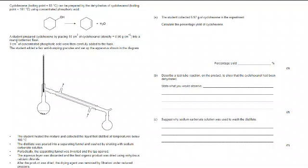The student heated the mixture, collected the liquid that distilled at temperatures below 100, distillate poured into a separating funnel, washed by shaking with sodium carbonate, periodically separating funnel inverted and the tap opened, aqueous layer discarded, final organic product dried using anhydrous calcium chloride. After drying, drying agent was removed by filtration under reduced pressure.